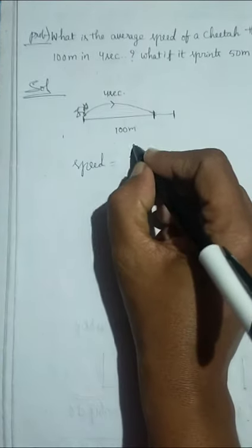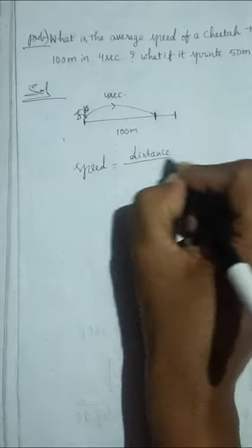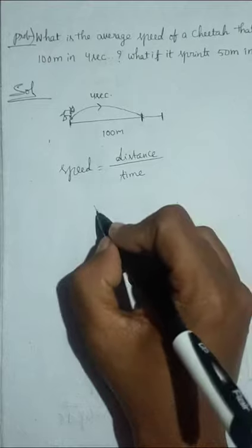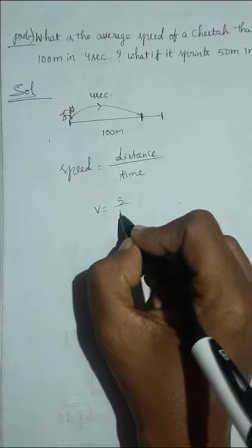Speed is equal to distance by time, so the short way of the formula: v is equal to s by t. You can use that.